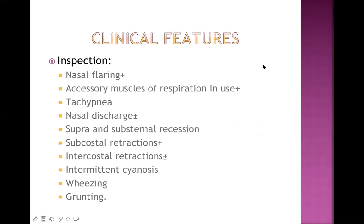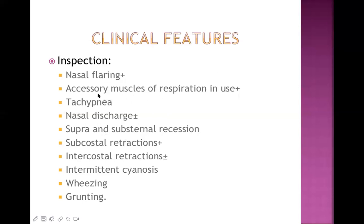On physical examination, the respiratory system is examined under inspection, palpation, percussion, and auscultation. On inspection, we may see nasal flaring, accessory muscles of respiration in use — especially sternocleidomastoid and trapezius — tachypnea, and nasal discharge. Remember the normal respiratory rates: up to 60 in the first two months, up to 50 for up to one year, and up to 40 for one to five years.